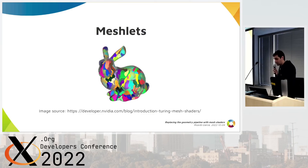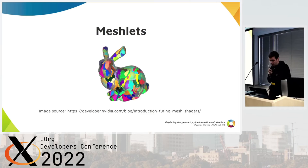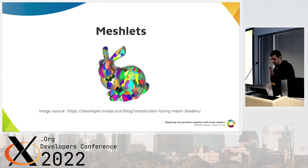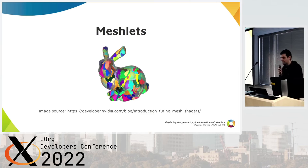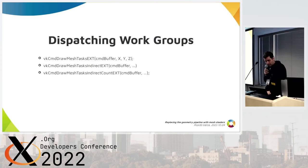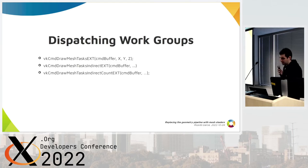Each work group can only emit a relatively small number of primitives and vertices, so for big models you need to dispatch several work groups. Each work group is in charge of generating and processing what is usually called a meshlet — the colored patches you see on the bunny. The subdivision of big meshes into meshlets is typically done when preparing assets for the application, so there's no runtime delay — they are pre-computed. Mesh shading work groups are dispatched with specific commands inside a render pass, very similar to compute dispatches, where you specify a 3D size and launch a number of work groups.